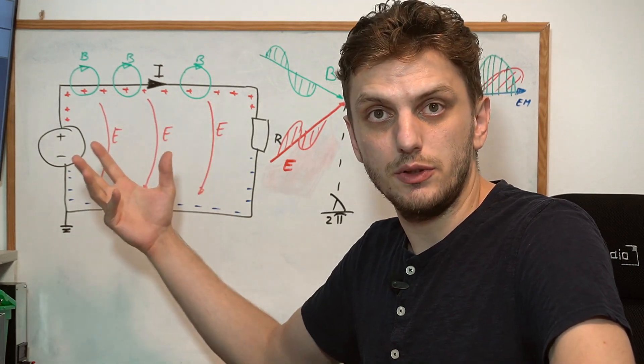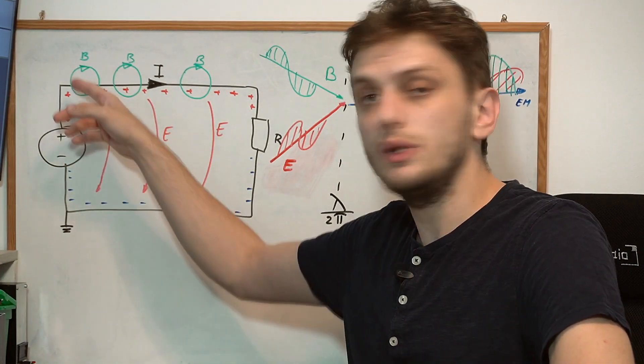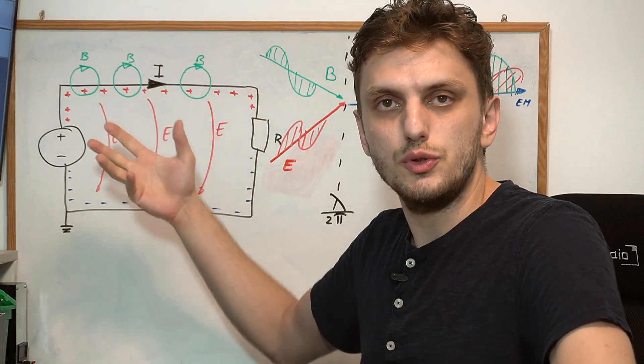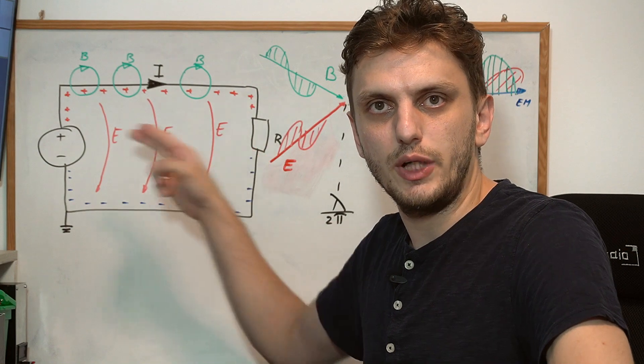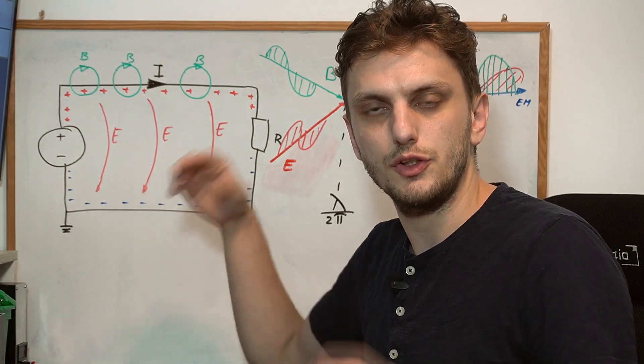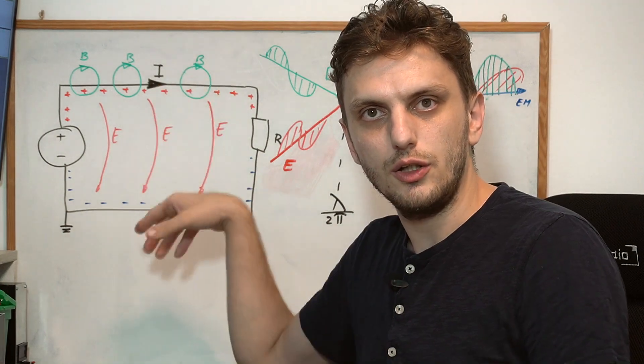So if you have power supply powering any sort of load you will have a current going through the wires. And any current going through a conductor will create a magnetic field around that conductor. Now also to supply your load you have a positive terminal and a negative terminal.